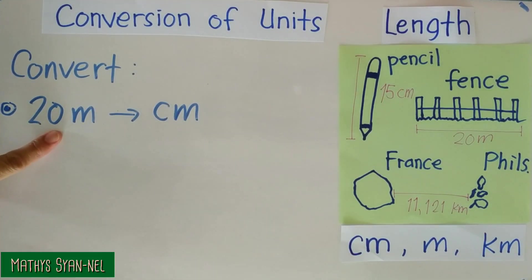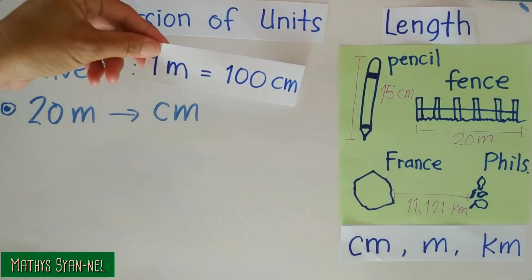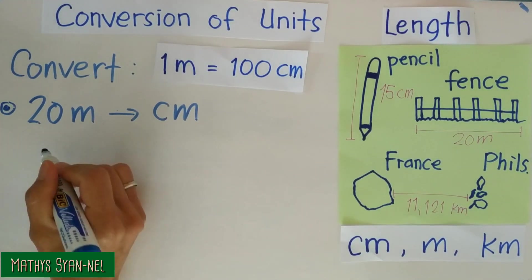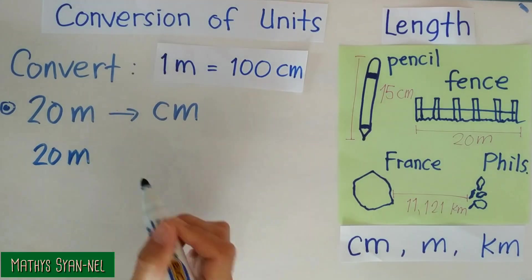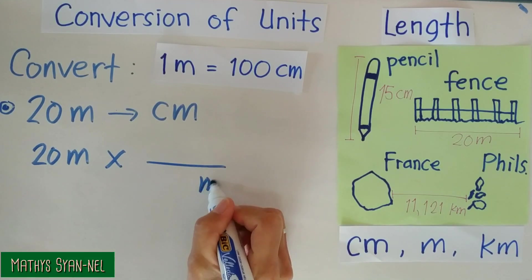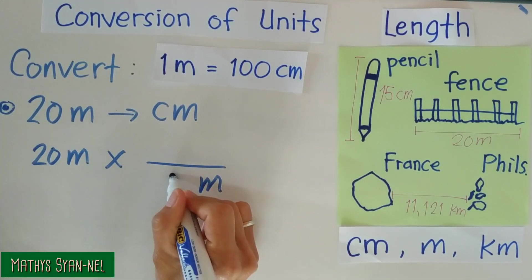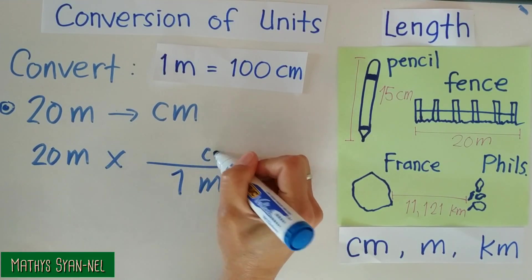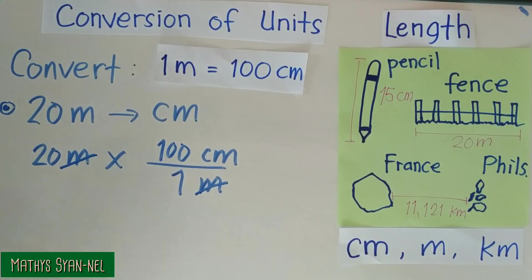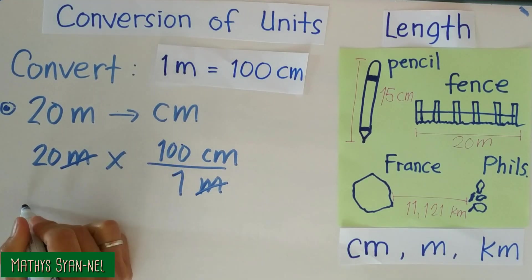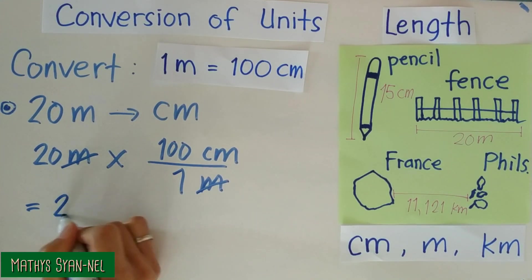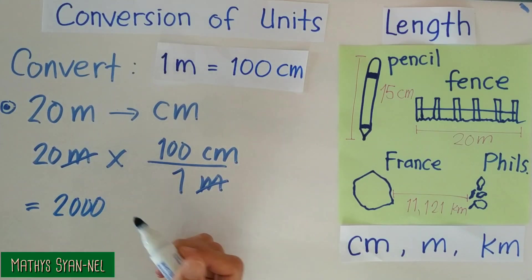Now, let's convert 20 meters to centimeters. The conversion factor is 1 meter equals 100 centimeters. First, copy the given — 20 meters — then multiply that to the conversion factor. Write meter opposite so you can cancel: that's 1 m equals 100 centimeters, so centimeter is on top. Cancel the meter, then multiply 20 and 100 to get 2,000 centimeters. That's the answer.